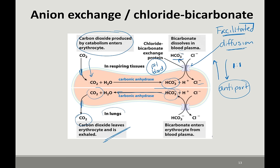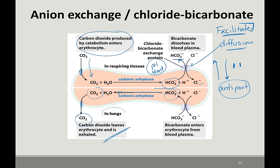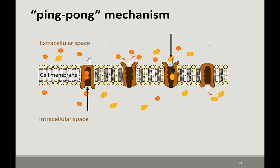One way these carrier proteins have been described as working is the ping pong mechanism — this emphasizes the conformational change. As the protein takes one type of molecule out, it has a certain conformation, and as it brings something else in, it has a slightly different conformation. It goes ping pong, back and forth. The anti-exchange carrier protein is described as a ping pong mechanism.